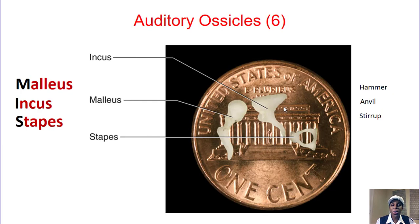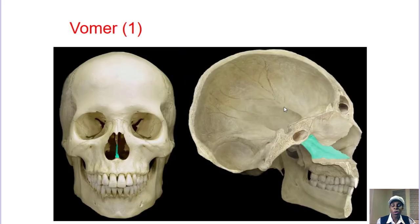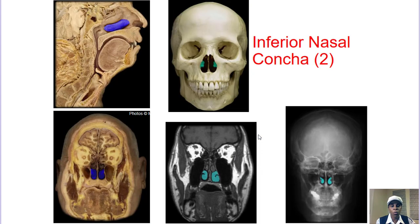The three auditory ossicles — remember Miss VIP: malleus (hammer-shaped), incus (anvil-shaped), stapes (stirrup-shaped). Then the mandible, the lower jaw. The vomer extends to the middle part of the ethmoid to form the nasal septum — the part of the bone that divides your nose into left and right.